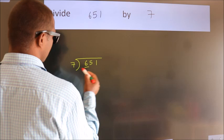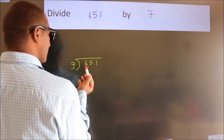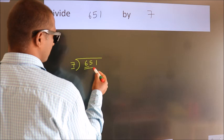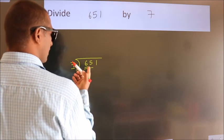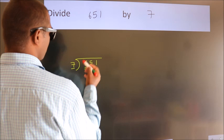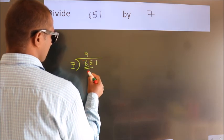here we have 6, here 7. 6 smaller than 7. So we should take 2 numbers, 65. A number close to 65 in 7 table is 7 nines, 63.